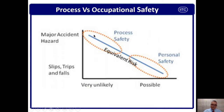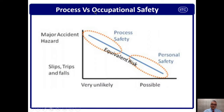Now talking about process safety — if you see here, the process safety is very unlikely in terms of frequency and likelihood. But the severity is MAH, major accident hazard. When we say major accident hazard, that means this event can kill many people at one point of time. It has huge impact on production loss, facility damage, and financial loss. This slide is very good to understand the definition as well as the difference between process safety versus occupational safety.